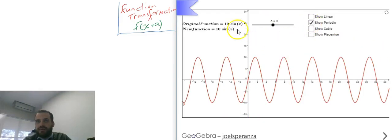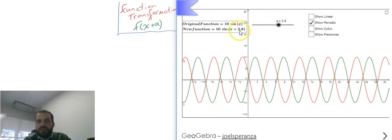In my periodic function, 10 sine x, if I'm adding a to x, I'm adding it inside of that bracket. And you can see there I'm adding x plus 2.8. I'm adding the letter a to wherever x appears in my function.